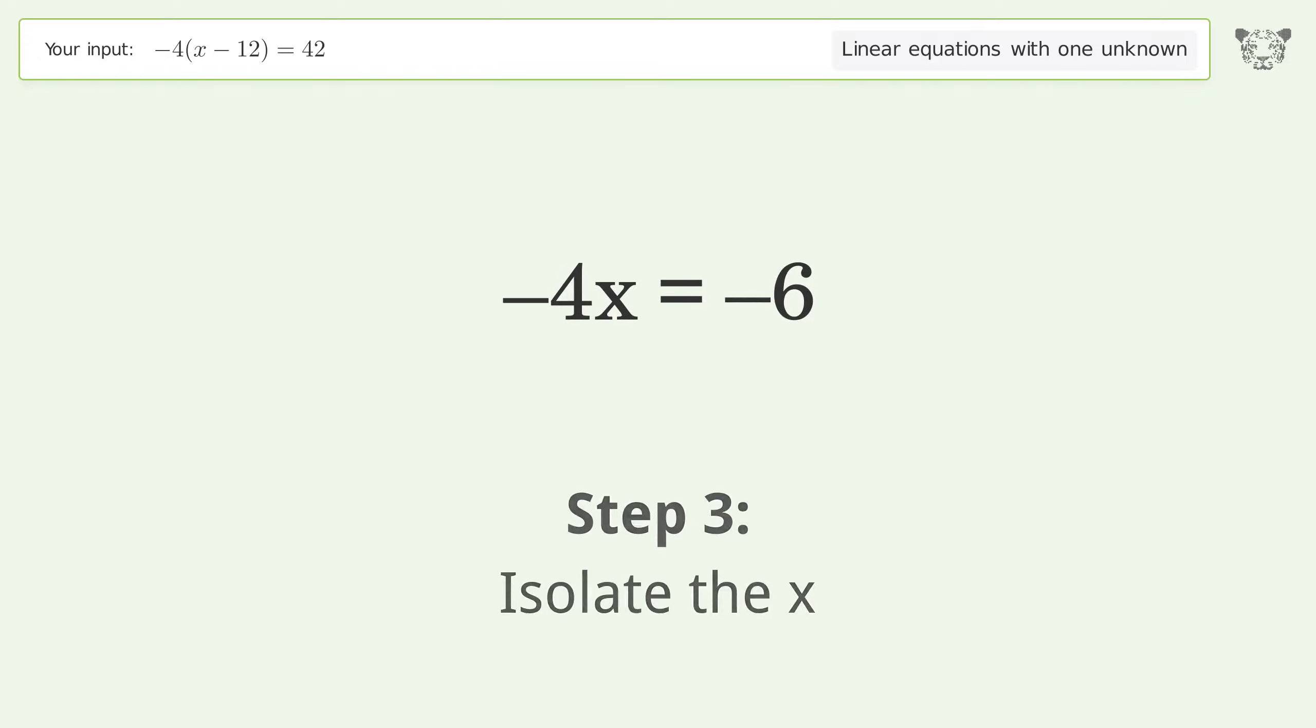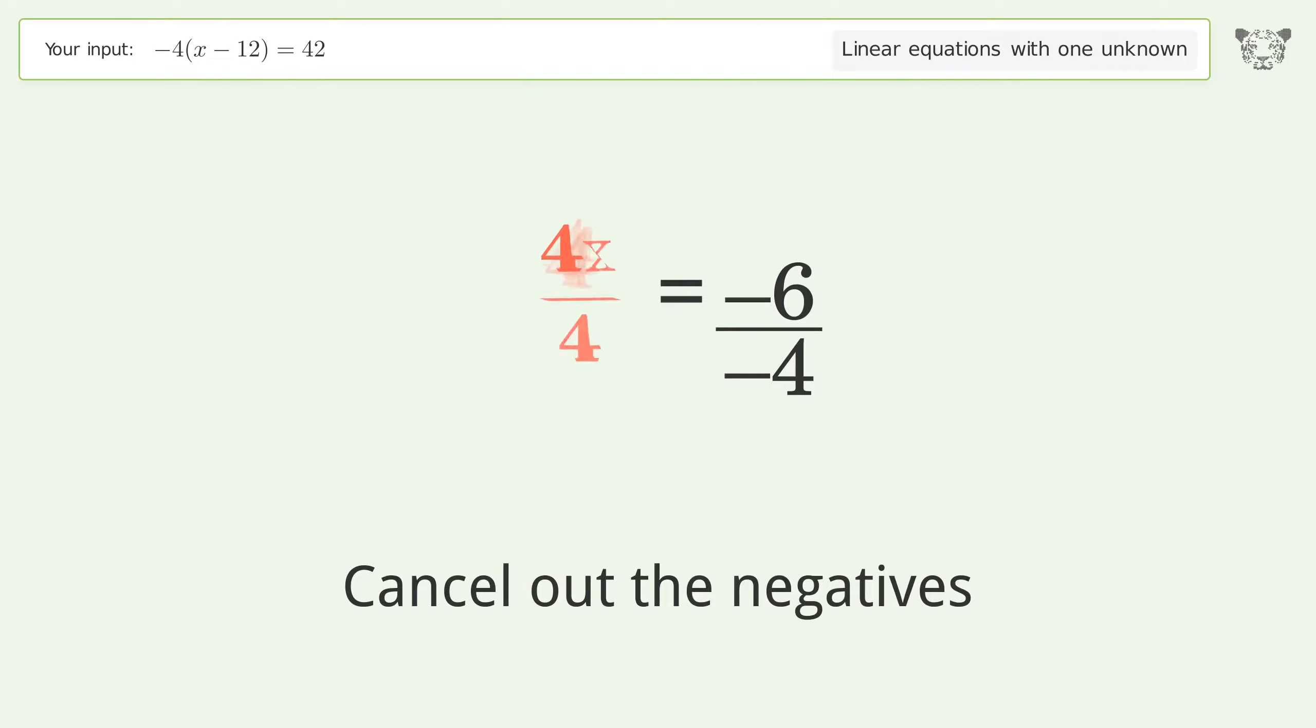Isolate the x. Divide both sides by negative 4. Cancel out the negatives. Simplify the fraction.